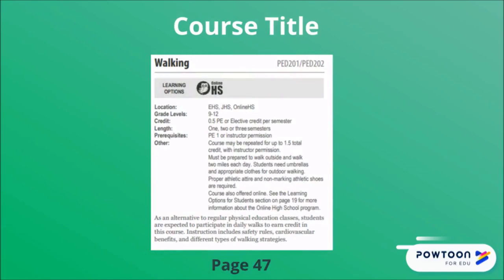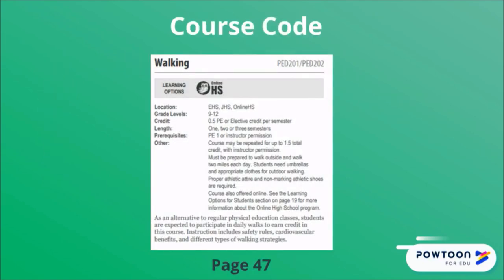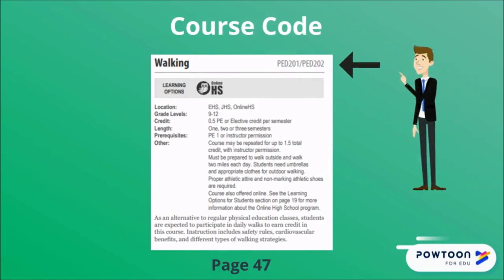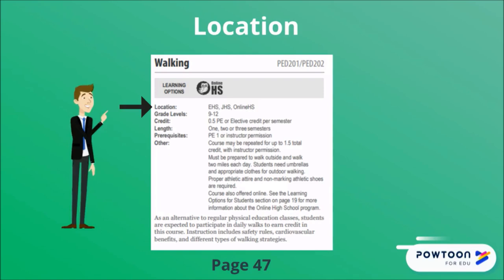Number one is the name of the class or course title — in this example, walking. Second is the course code; you can list this on your pre-registration form and use it to search for your courses online — in this example, PED 201/PED 202. Third is the location of the class. Pay attention as some classes are listed for other high schools, which Jackson students are generally not allowed to take. You will want to find classes that are listed for JHS.